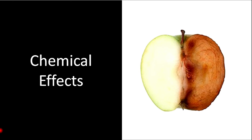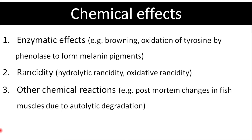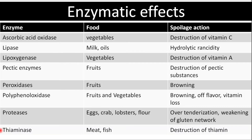The next cause of food deterioration is chemical factors. Food spoilage can occur due to enzymatic reactions, rancidity, and other chemical reactions such as autolytic degradation of muscles. Among those, the major chemical factor is enzymatic reactions that change the quality of foods. Temperature, oxygen, water, and pH induce deleterious changes in food that are catalyzed by enzymes. For example, fruit turns brown rapidly at room temperature due to the reaction of phenolase with cell contents released in the presence of oxygen.